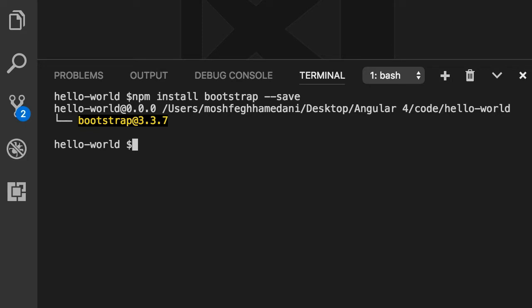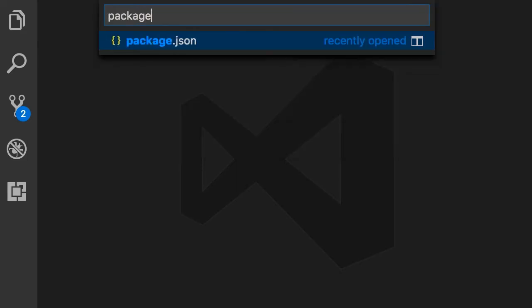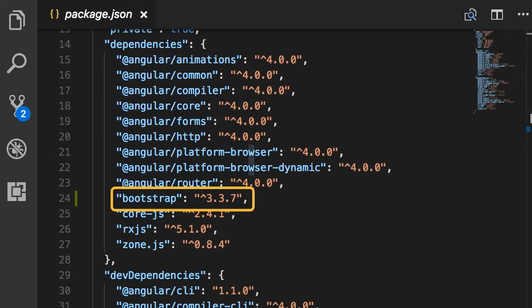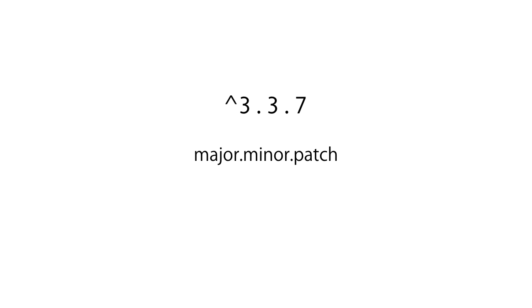Alright, we got Bootstrap version 3.3.7. Now let's go to package.json. In the list of dependencies, we have an entry for Bootstrap and here's the version number 3.3.7. Now what is this character here? This version consists of three numbers: a major number, a minor number, and a patch number. This character means we can use the most recent minor version — so we can use version 3.4, 3.5, 3.9 — but if there is a newer major version like version 4 or 5 we are not going to install that. We can upgrade to the most recent within major version 3.